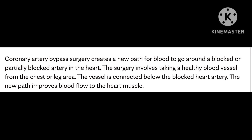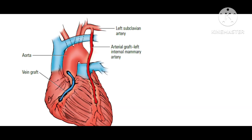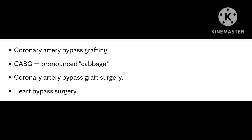This new path will improve the blood flow to the heart muscle. It is similar to when you are on a road with heavy traffic and the traffic police divert the traffic through another route. Coronary artery bypass grafting procedure bypasses the blocked area and restores circulation to the heart muscle. It can also be called CABG, heart bypass surgery, or coronary artery bypass graft surgery.